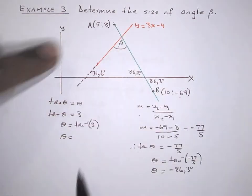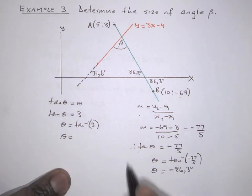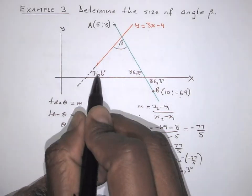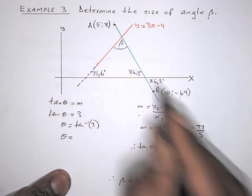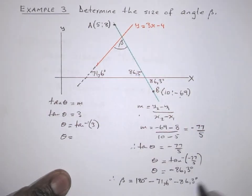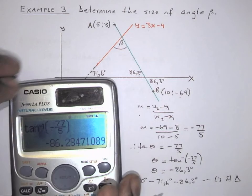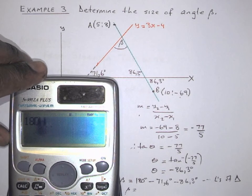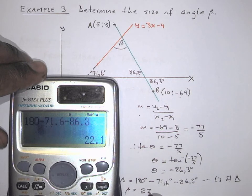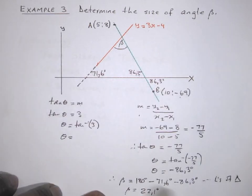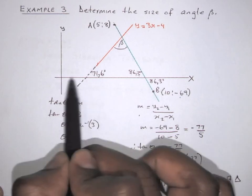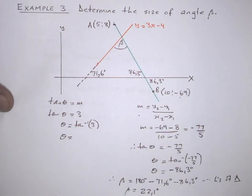Using the angles of a triangle, angle beta equals 180 degrees minus 71.6 degrees minus 86.3 degrees. Putting that in the calculator: 180 minus 71.6 minus 86.3 equals 22.1 degrees. So beta is 22.1 degrees — the angle at the top. First find the angles on the x-axis, then the angle up there. It's easy to get.